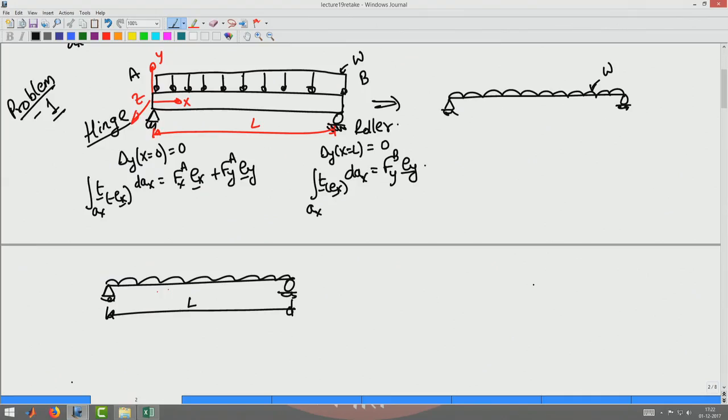Now, let us go about solving this problem. I will use the one dimensional approximation from now on. I have this UDL over length L. So, I have the equation d square mz by dx square is equal to qy which in this case since the load is acting vertically downwards will be minus w. Now, then if I integrate it twice I will get mz to be minus w x square by 2 plus c1 x plus c2.